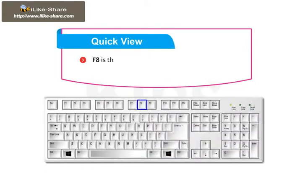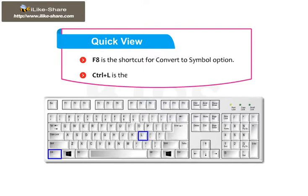F8 is the shortcut for the Convert to Symbol option. Ctrl+L is the shortcut to open the library panel.